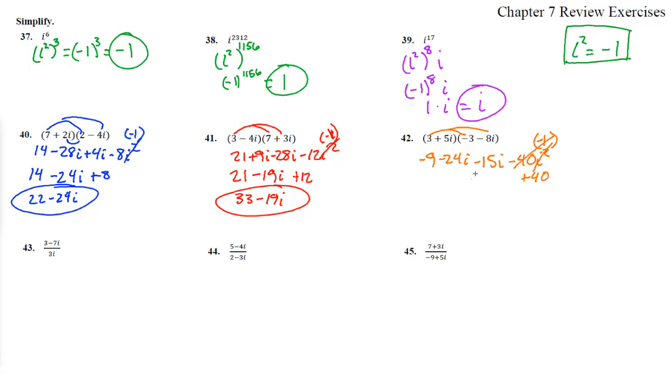Negative 1 makes this a plus 40. So 40 minus 9 is 31 minus 39i. That's a minus 24 and a minus 15.